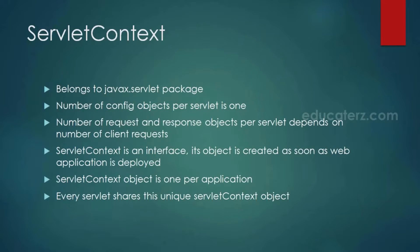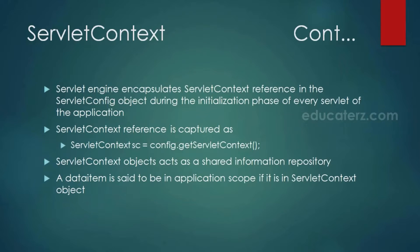To understand application scope, we need to know what ServletContext is — it's an interface belonging to the javax.servlet package. There is one ServletContext object per application, and it is created as soon as the web application is deployed, so every servlet in the application can share this unique object. We retrieve the ServletContext object using config.getServletContext() if the parameterized init method is used, or simply getServletContext() if the default init method is used. If a data item is shared via the ServletContext object, it is said to be in application scope.